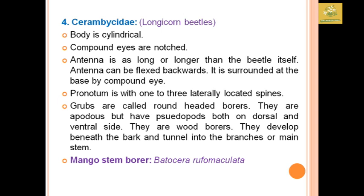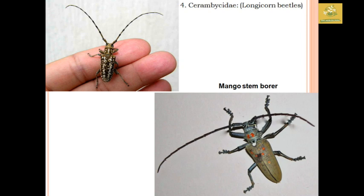Cerambycidae comprises longicorn beetles. The body is cylindrical, compound eyes are notched, and the pronotum has one to three lateral spines. Grubs are called round-headed borers, are apodous in nature, and have pseudopods both dorsally and ventrally. They are known as wood borers and develop beneath bark, tunneling into branches or main stems. An example is the mango stem borer, Batocera rufomaculata.